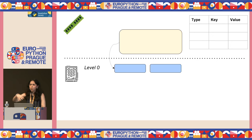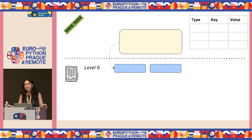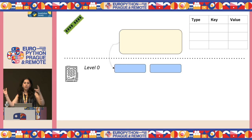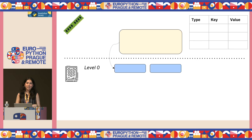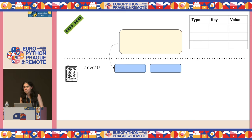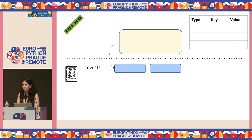As more and more data gets inserted, we get more and more SST files, and you would soon notice an issue: we have duplicate values sitting at level zero which we no longer need — updates, deletes — just occupying unnecessary space and cluttering our database. So here, RocksDB employs a clever strategy called compaction.